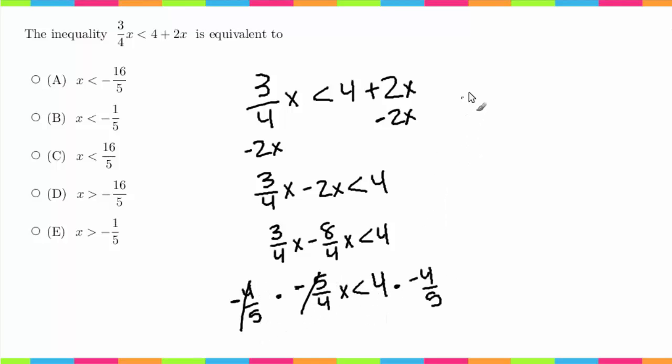These would cancel out. I would get x is greater than, because I'm flipping the sign, negative 16/5. So now looking at the answer choices, we see that that is answer choice D.